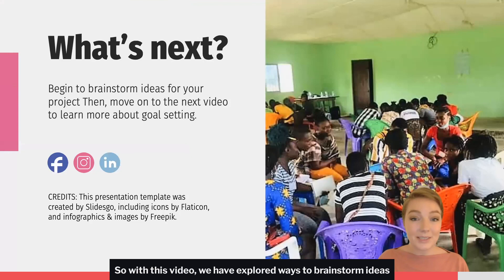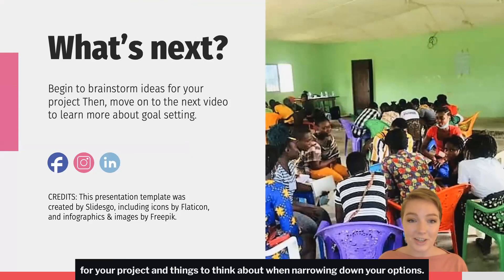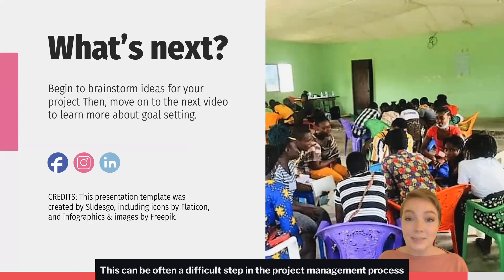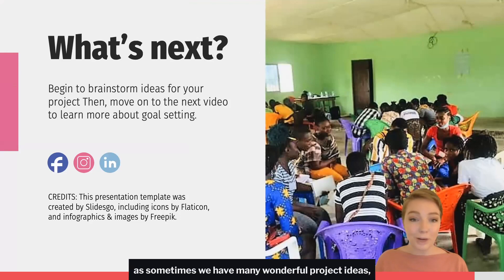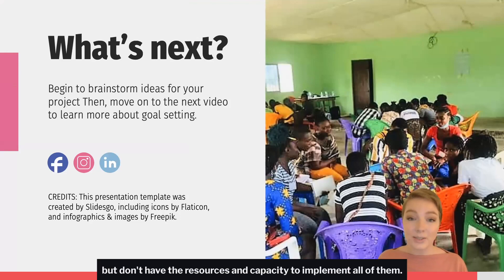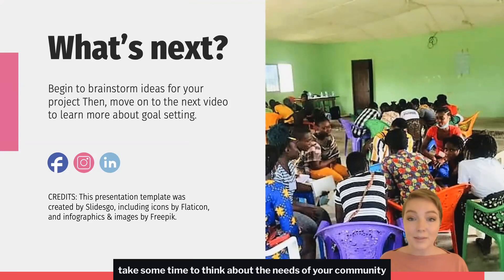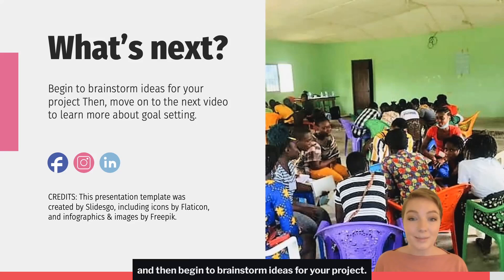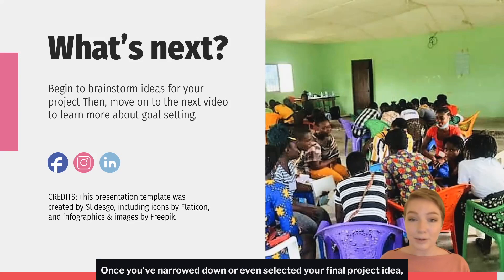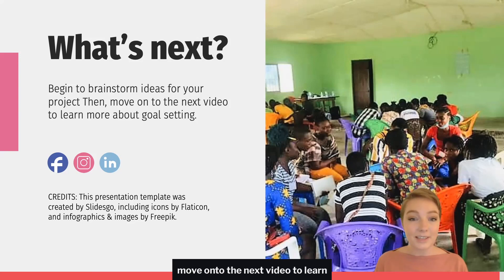So, with this video, we have explored ways to brainstorm ideas for your project and things to think about when narrowing down your options. This can often be a difficult step in the project management process, as sometimes we have many wonderful project ideas but don't have the resources and capacity to implement all of them. After watching this video, take some time to think about the needs of your community and the resources you have, and then begin to brainstorm ideas for your project. Once you have narrowed down or even selected your final project idea, move on to the next video to learn how to set goals and begin your project steps.